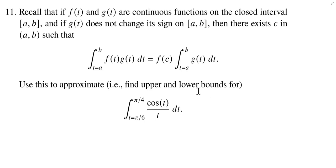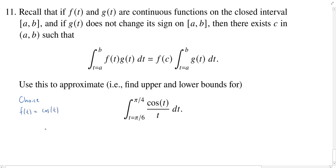We're just going to pick one here — you might choose the other one, and that's fine. I'm going to choose my f of t — this is a choice, you could have chosen the other way — I'm going to let my f of t be cosine of t. I had no particularly good reason for making that choice, I just chose it as the first thing I saw. So then my g of t will be 1 over t.